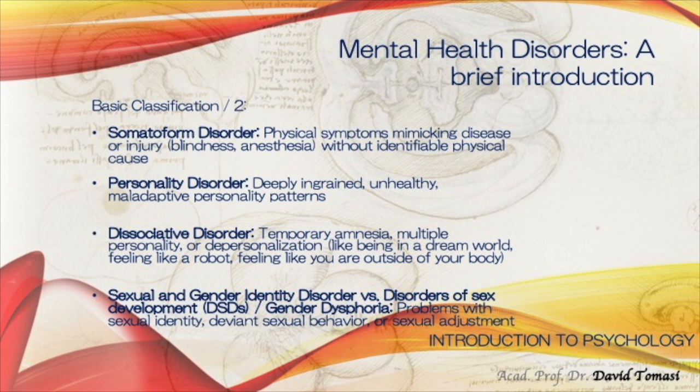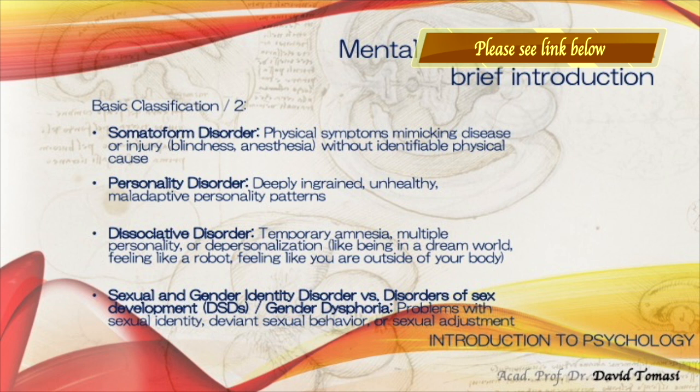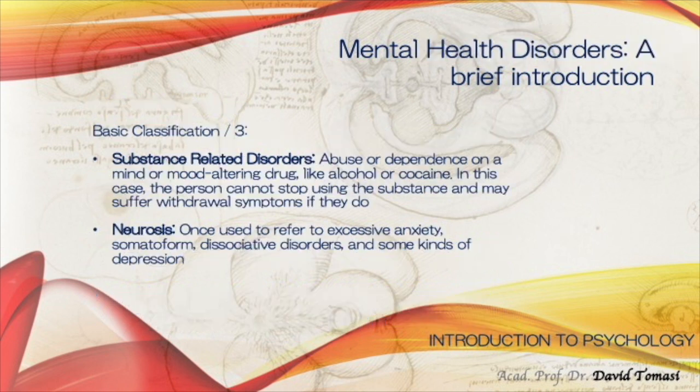Sexual and gender identity disorders versus disorders of sex development (DSDs), gender dysphoria, problems with sexual identity, deviant sexual behavior, or sexual adjustment are a very complex topic we'll discuss more in depth. Substance-related disorders involve abuse or dependence on a mind- or mood-altering drug like alcohol or cocaine, where the person cannot stop using the substance and may suffer withdrawal symptoms if they do.